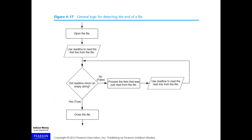You can see the flowchart of it. There's a symbol to open the file, then you use the input symbol and readline to read the first line. Then is it an empty string? If it is, close the file; if not, process the item that was just read, then use readline again to read the next line from the file. It's a pretty straightforward approach.